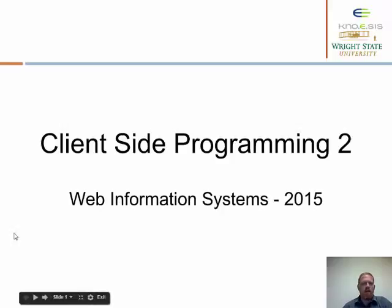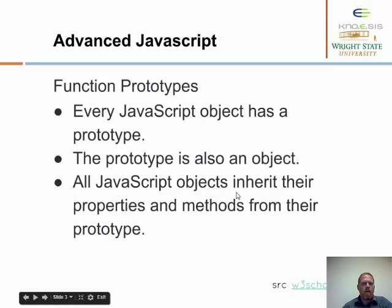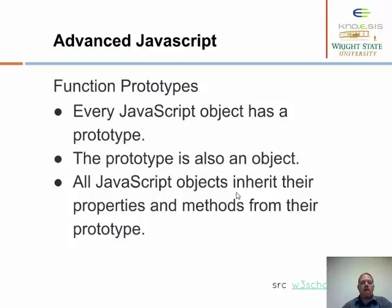Alright, let's talk about some more advanced JavaScript. We talked last time about function properties. Every JavaScript object has a prototype. Every prototype is an object, and JavaScript objects inherit their properties and methods from their prototype.